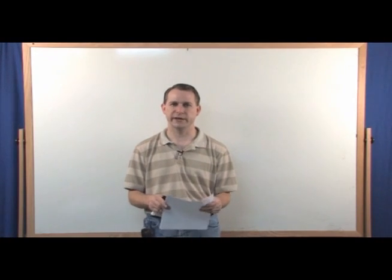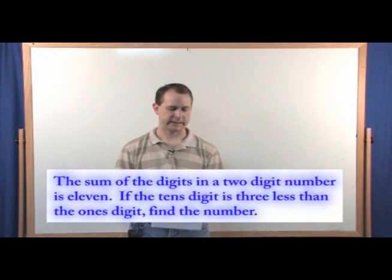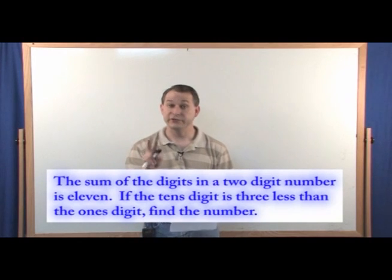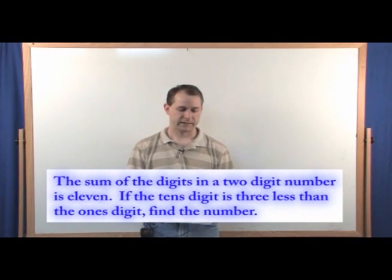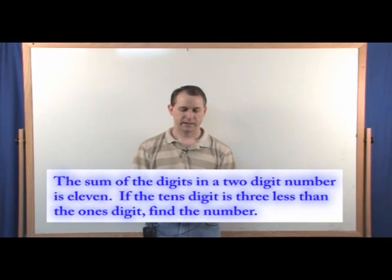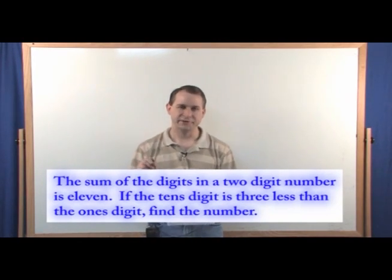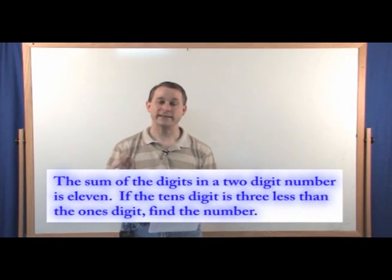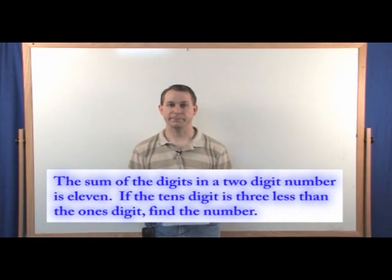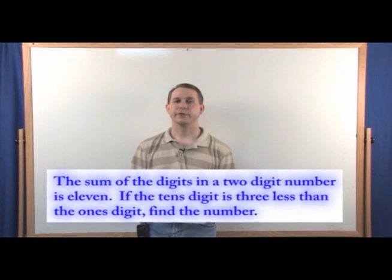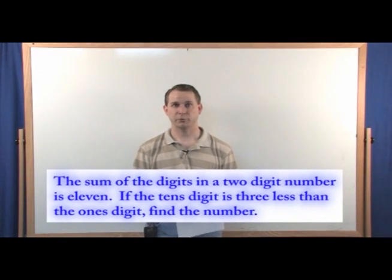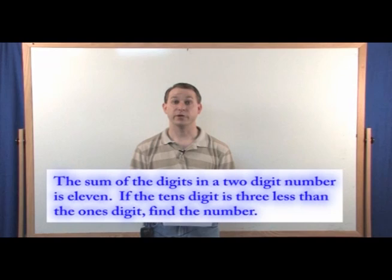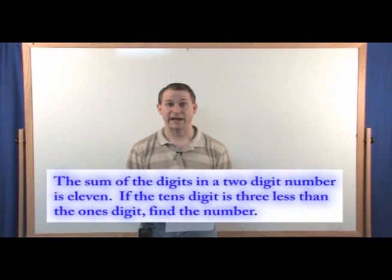The first problem we're going to do today goes like this: the sum of the digits of a two-digit number is 11. If the tens digit is three less than the ones digit, find the number. The first thing we have to do, just like with any of these problems, is understand what it's actually asking us.